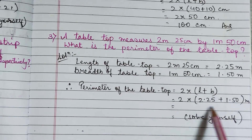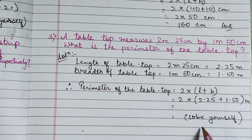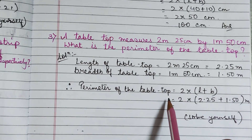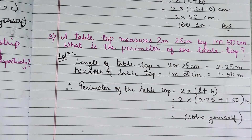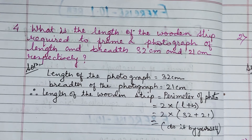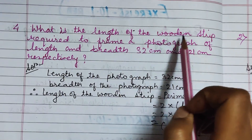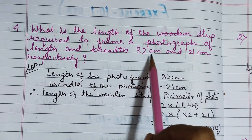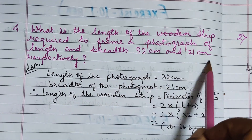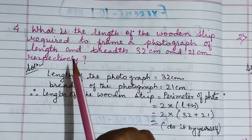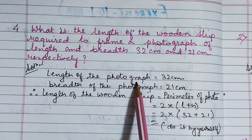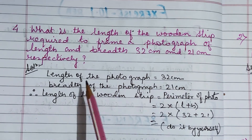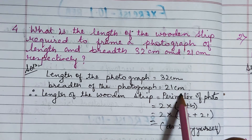Now you solve this by yourself. The value which you will get will be the perimeter of the table top. Now let us see the next question, that is question number 4. In question number 4 we have: what is the length of the wooden strip required to frame a photograph of length and breadth 32 cm and 21 cm respectively? Here the length of the photograph is equal to 32 cm and breadth of the photograph is equal to 21 cm.